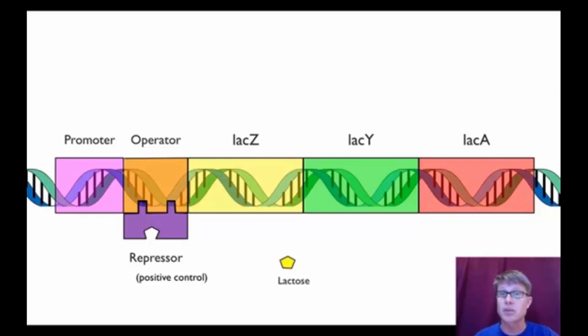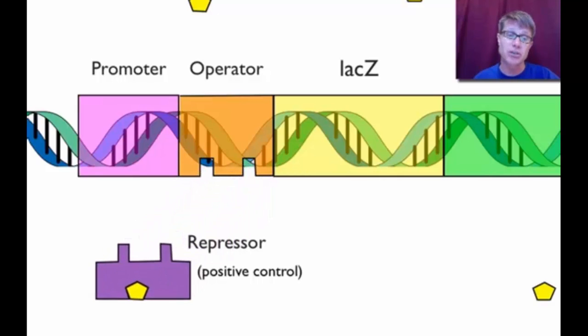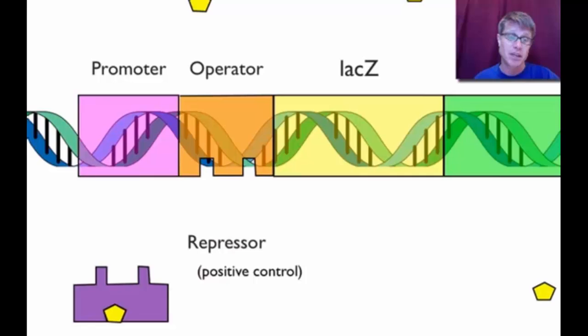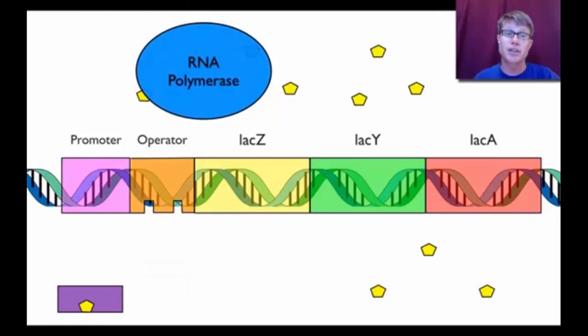But let's say lactose shows up. In other words I drink a glass of milk. Now there's lactose. So the lactose shows up. The lactose you'll notice is going to fit perfectly into that repressor. And when it fits in the repressor it changes the conformation or the shape of that protein. In other words now the repressor doesn't fit in the operator anymore. In other words it lacks these little prongs that fit in the operator. So lactose is present. Repressor is now off. Well who can grab on? RNA polymerase now fits.